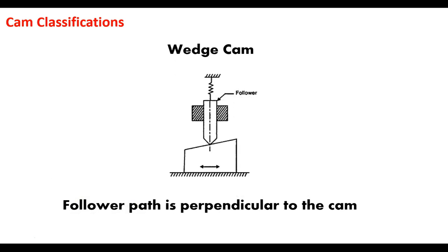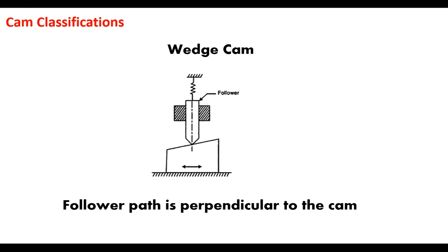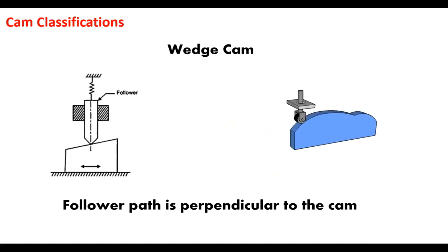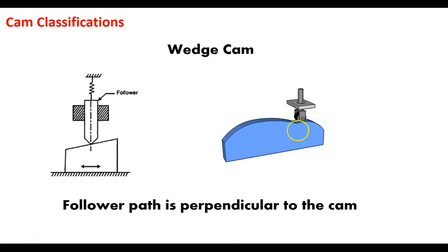Then there is the wedge cam, which is very basic. Your follower is perpendicular to the cam itself — the cam here is a wedge, literally just an incline that moves from left to right, allowing the follower to go up and down. You're perpendicular to the travel of the cam. This is a simplistic one, but it can give you different configurations — it doesn't have to be a rigid incline, it can be a gentle slope, but still follows the same idea.